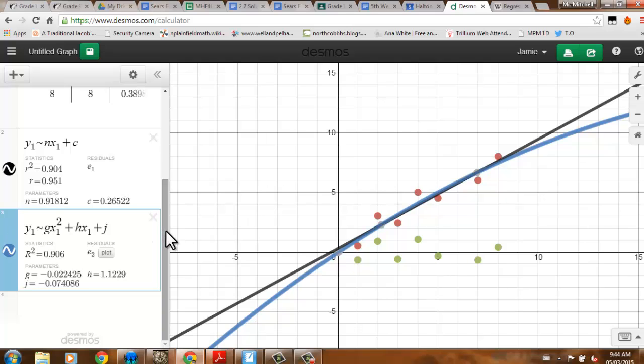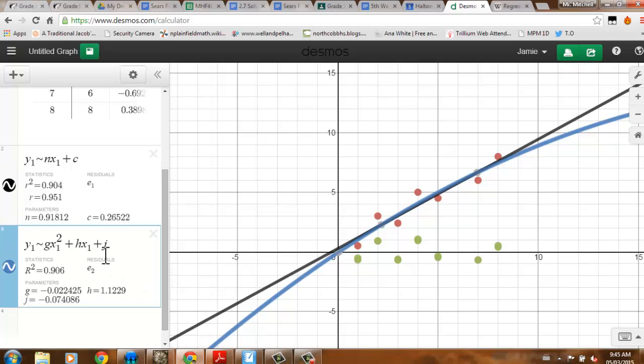Desmos is telling me that this is actually a better curve of best fit than my line of best fit, because my r-squared value is greater. It's 0.906, so not much better. This is where you need to be looking at your data and figuring out where it's coming from and why maybe a line might fit it better than a curve. Sometimes, even though the numbers tell us one thing, reality tells us something else.